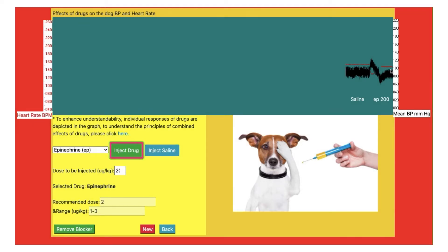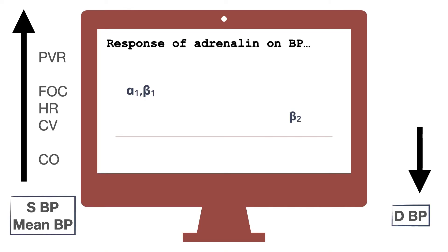This is called a biphasic response of adrenalin on blood pressure. At the receptor level, initially when we inject the drug, the level of adrenalin in the plasma is high. At this time, the sensitive receptors are alpha-1 and beta-1. Stimulation of alpha-1 receptors located on peripheral blood vessels results in vasoconstriction and increased peripheral vascular resistance. Stimulation of beta-1 receptors located on the heart results in positive inotropy, positive chronotropy, and positive dromotropy — meaning increase in force of contraction, increase in heart rate, and increase in conduction velocity respectively. Due to alpha-1 and beta-1 action, cardiac output is also increased.